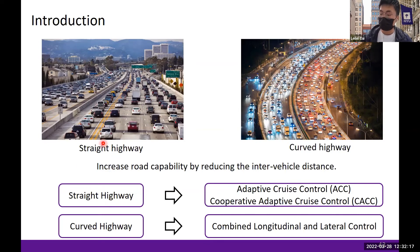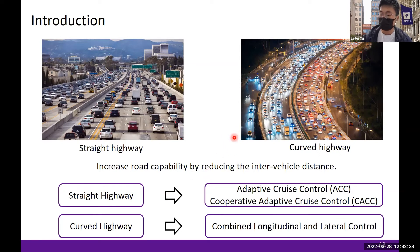The increase in the number of vehicles challenges the capability of existing transportation infrastructure. In order to solve the congestion problem, one way is to increase road capability by reducing the inter-vehicle distance. For straight highway or road, we can apply adaptive cruise control (ACC) or cooperative adaptive cruise control (CACC) to solve the longitudinal control problem with the help of vehicle-to-vehicle communication. However, when roads are curved, the vehicle should not only maintain a desired inter-vehicle distance but also stay in the lane — this can be addressed by combined longitudinal and lateral control.